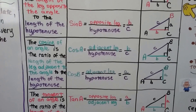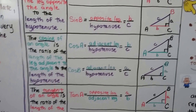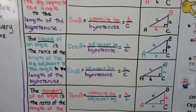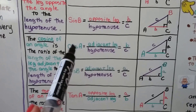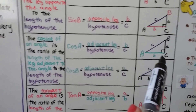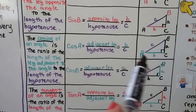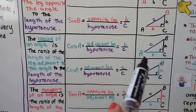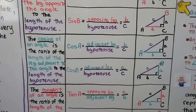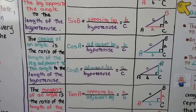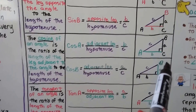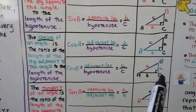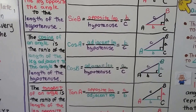The cosine of an angle is the ratio of the length of the leg adjacent — that's next to — the angle to the hypotenuse. So the cosine of A: here's angle A, and the leg next to it is this one, so it's that leg over the hypotenuse. And the cosine of B would be the ratio of the leg adjacent to angle B over the hypotenuse.